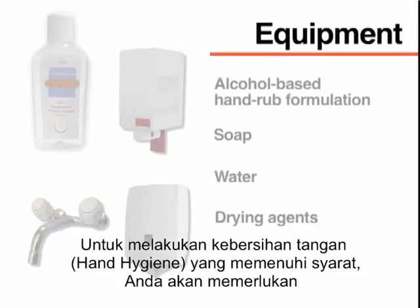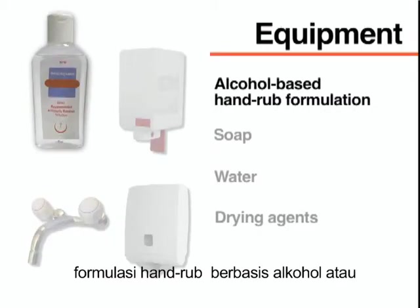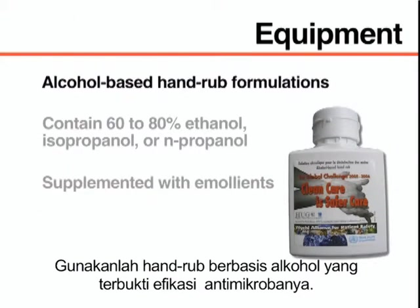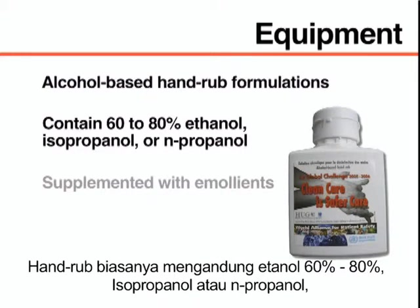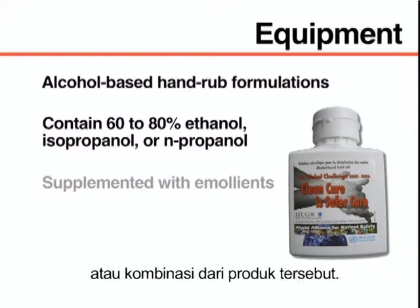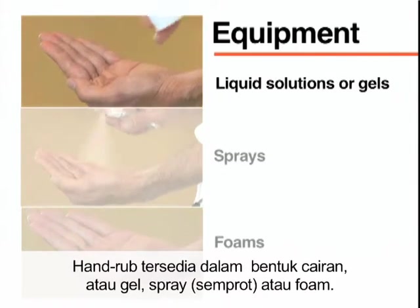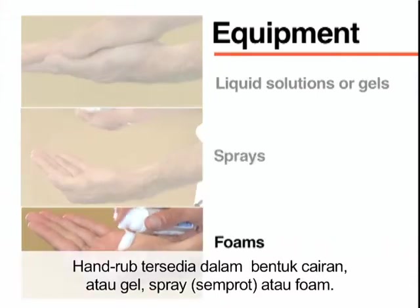To perform adequate hand hygiene, you will need an alcohol-based hand rub formulation or soap, water, and drying agents such as disposable paper or cloth towels. Use alcohol-based hand rubs with proven antimicrobial efficacy. These usually contain 60–80% ethanol, isopropanol, or n-propanol, or a combination of these products, supplemented with emollients to protect the skin. They are available as liquid solutions, gels, sprays, or foams.